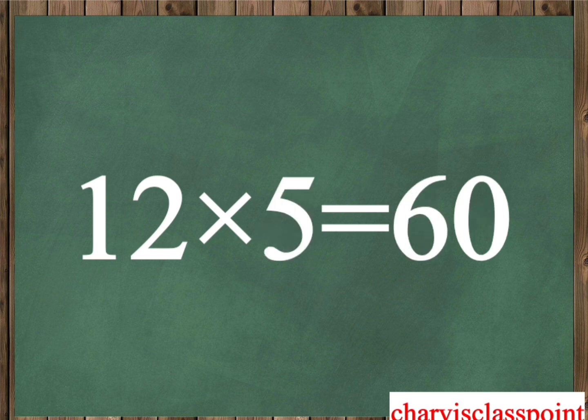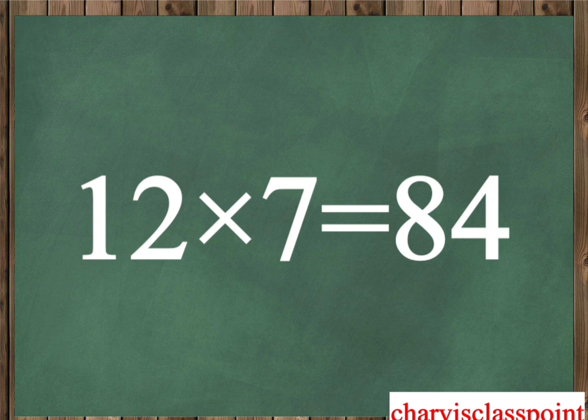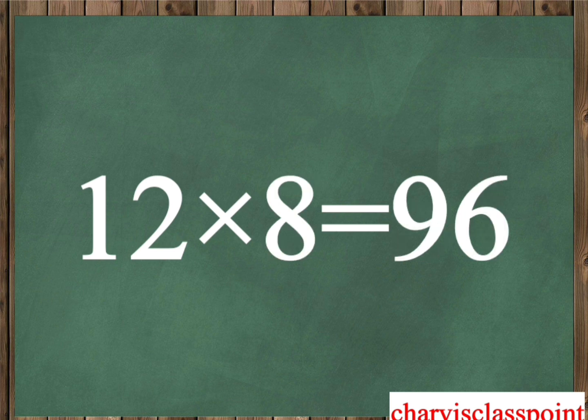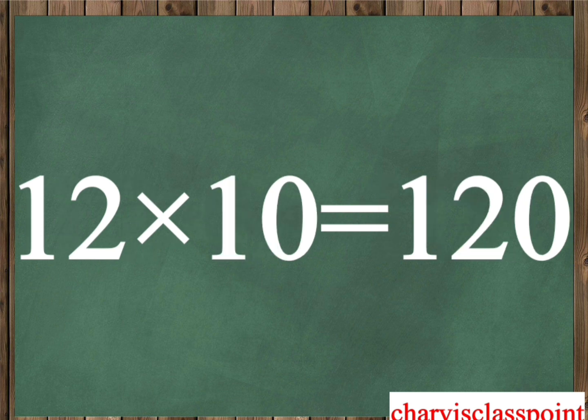Twelve five is sixty. Twelve six is seventy-two. Twelve seven is eighty-four. Twelve eight is ninety-six. Twelve nine is one hundred eight. Twelve ten is one hundred twenty.